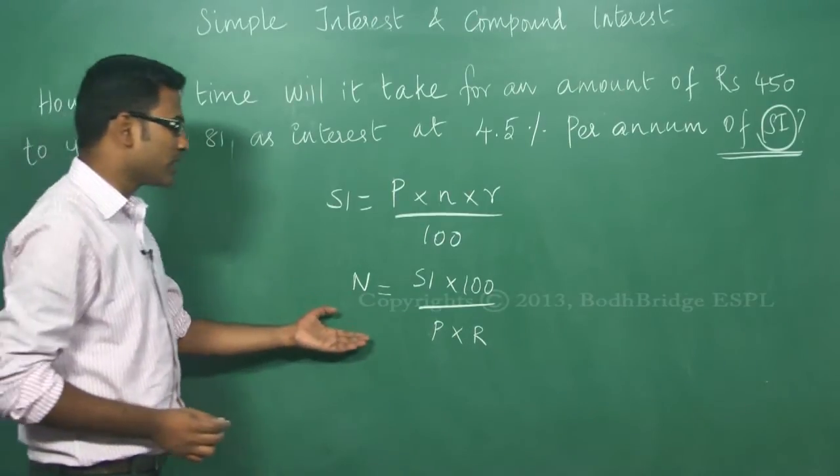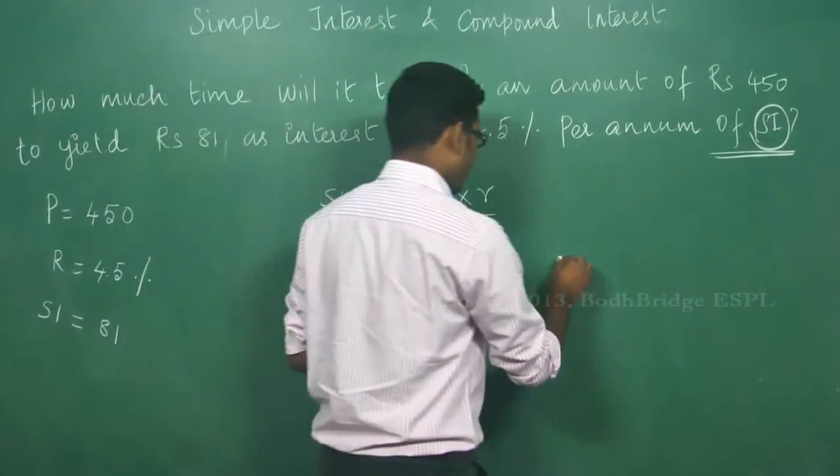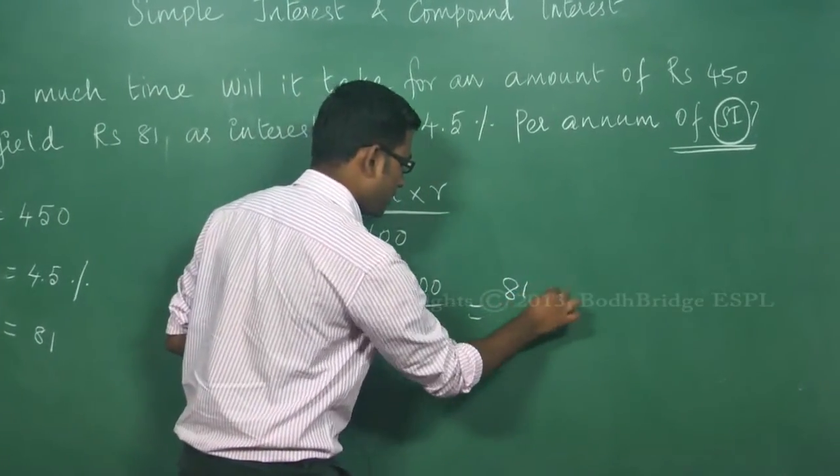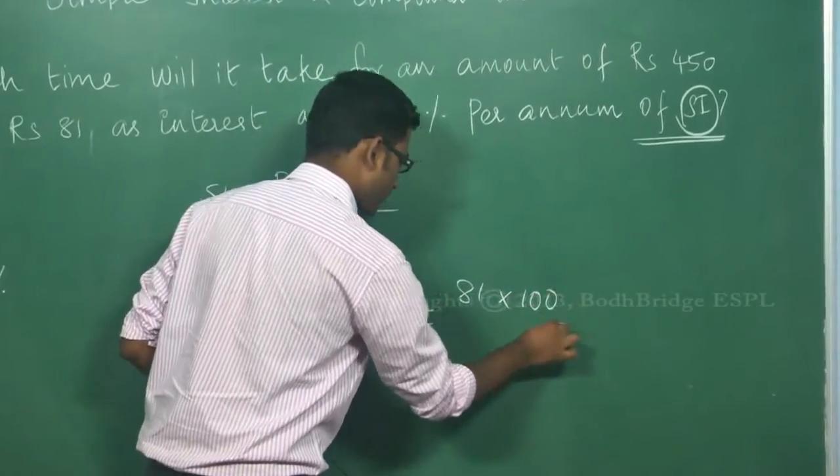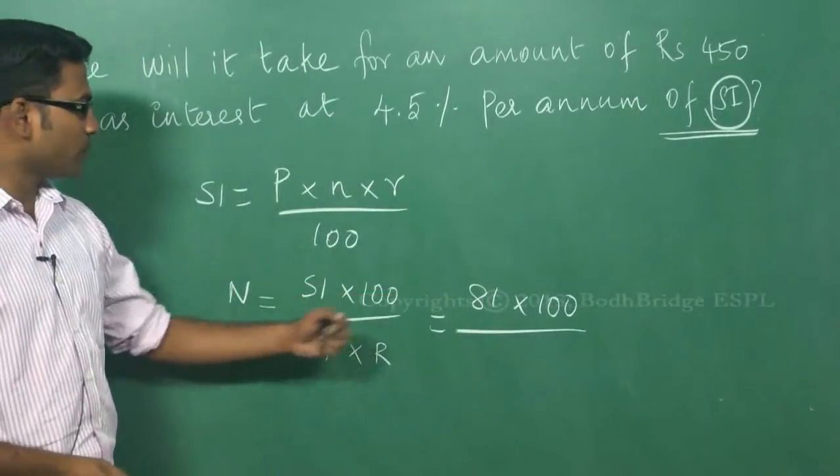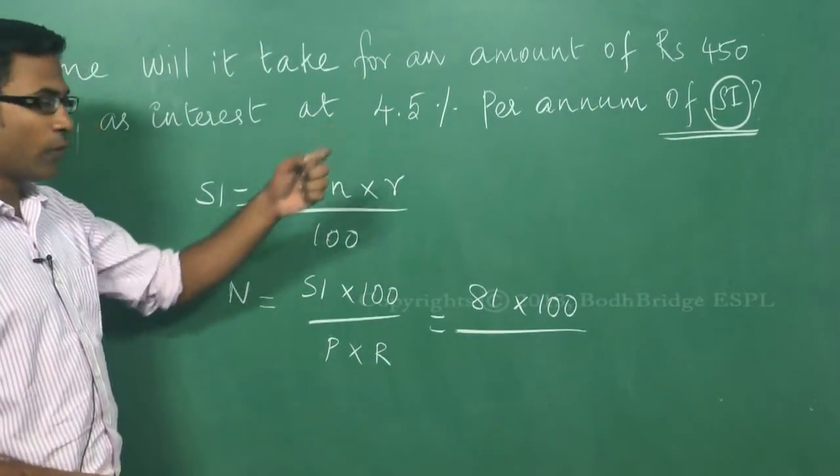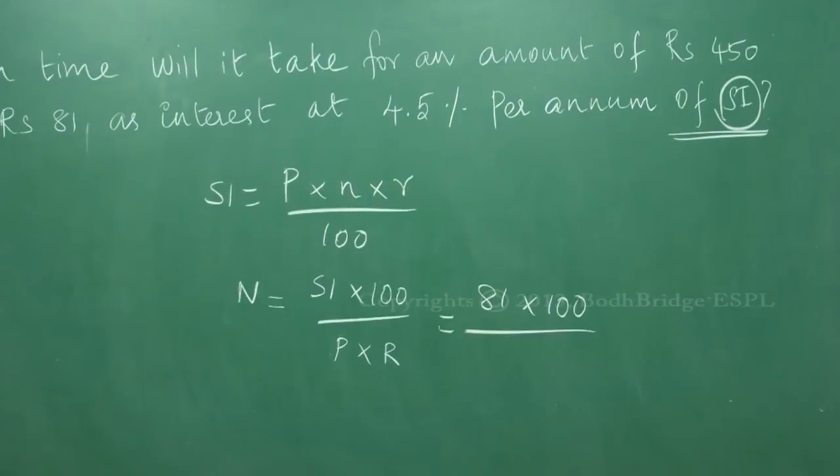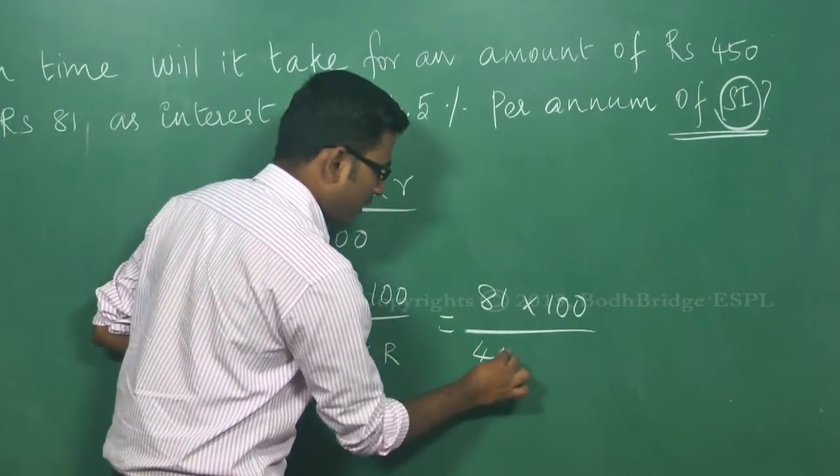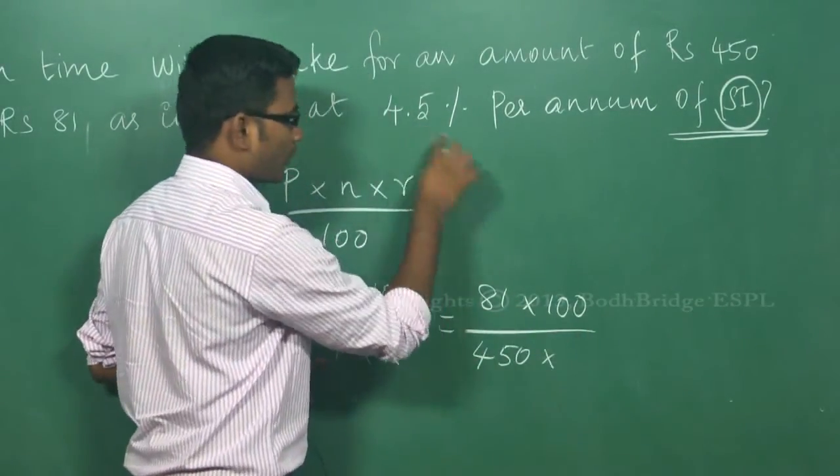I just have to substitute in this formula. Simple interest is 81. Principal amount is 450. That is what we listed out. 450 we have to substitute. The rate of interest is 4.5.